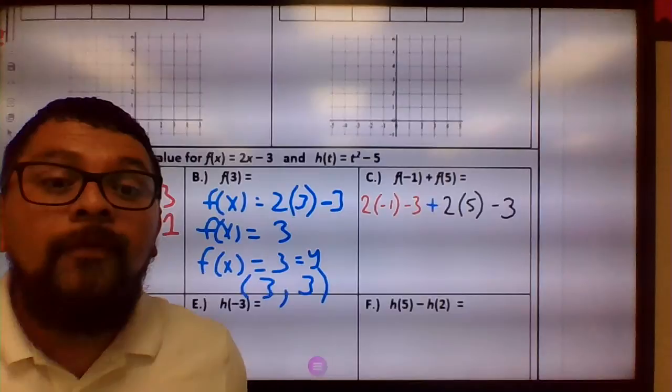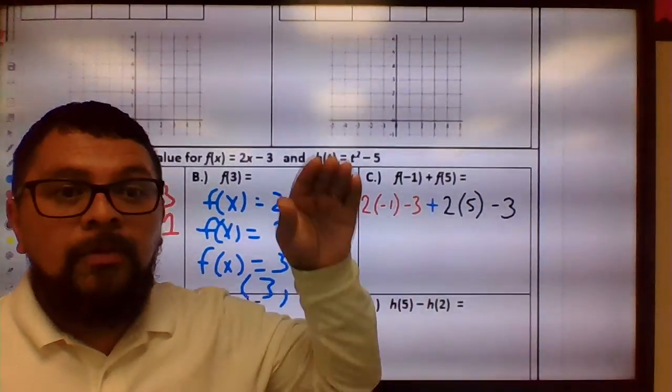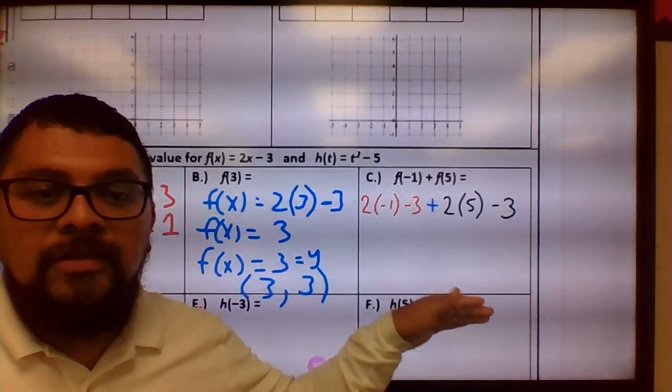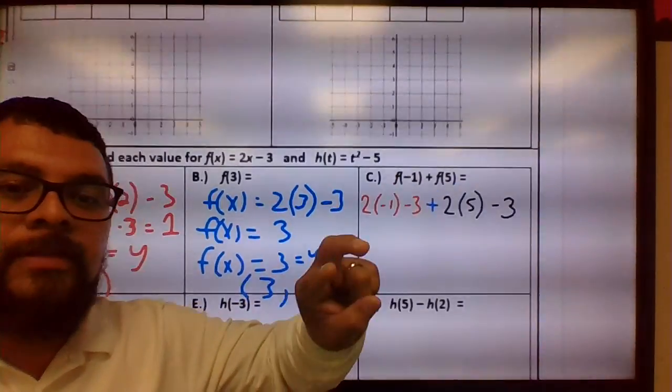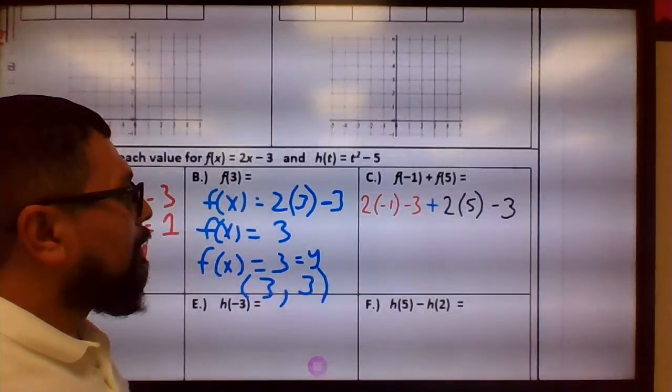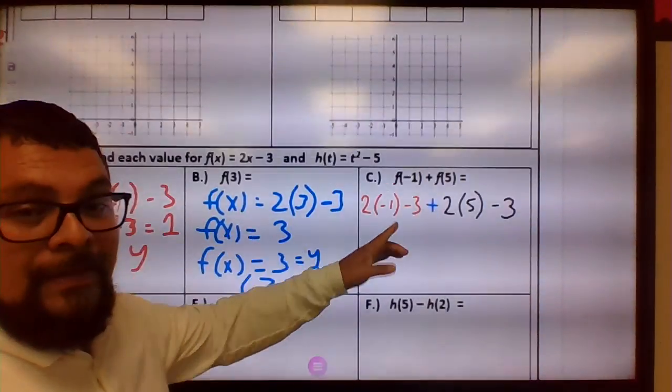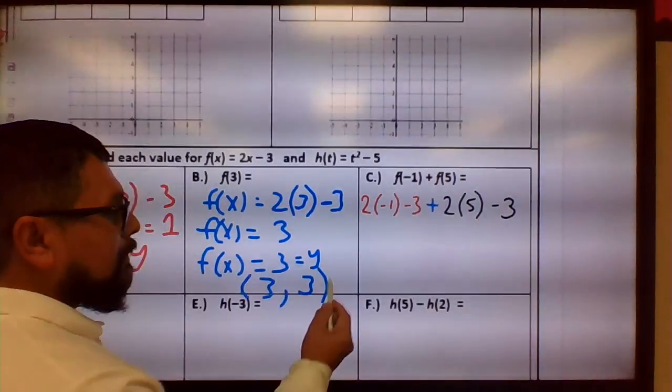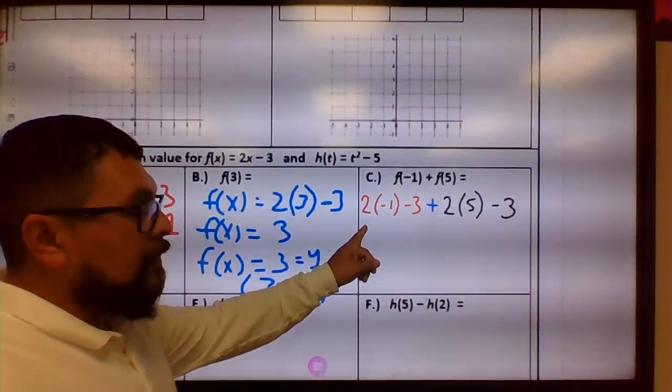This is where we're going to use your order of operations. Order of operations says parentheses first, exponent, multiplication, division, addition, and then subtraction, but you can switch multiplication, division, and you can switch addition and subtraction. I just put this parentheses just to put it, but that means multiplication, so this is multiplication, and this is multiplication, so we're going to go ahead and do this one first.